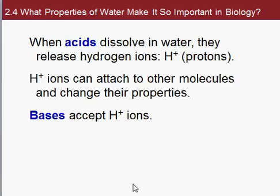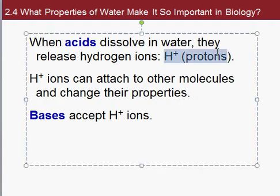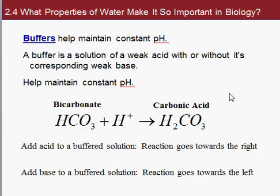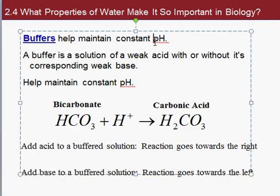The last slides briefly cover acids and bases. An acid dissolves in water and releases hydrogen ions — we'll call these protons sometimes, and we'll be talking about hydrogen ions and protons a lot later in the class. Bases accept hydrogen ions. Buffers maintain a constant pH of a substance. pH is a measure of the percent hydrogen ions. Buffers help maintain constant pH. That's a basic overview of Chapter 2.